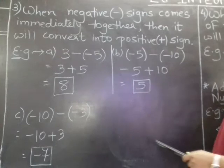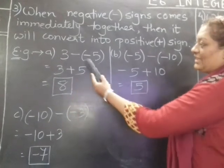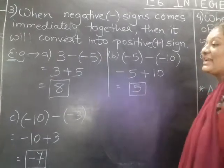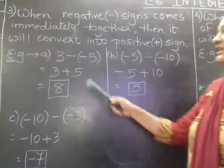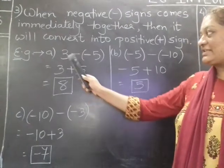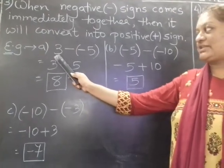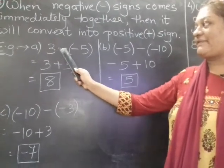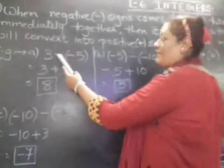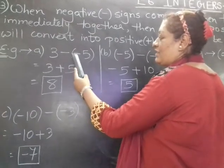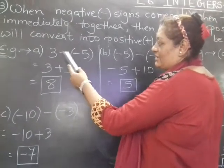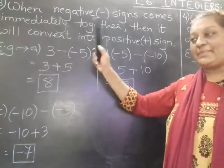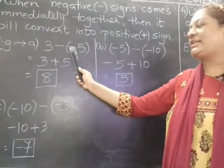Now understand this important point — I am not talking about the integers here, but about the signs. Two negative signs must be immediately together. If you can see no integer between those two signs, then it can be said that these two signs are immediately together.